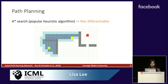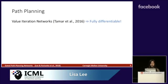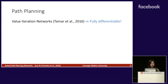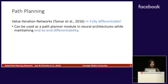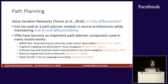There are many path planning algorithms, an example being A-STAR search, which is a popular heuristic algorithm, but it is not differentiable. A recent work introduced a neural architecture for path planning called value iteration networks. Differentiability allows this method to be used as a path planner module within a larger neural architecture, while maintaining end-to-end differentiability. VINs have become an important path planner component used in many recent works, and their wide usage demonstrates effectiveness as a path planner.